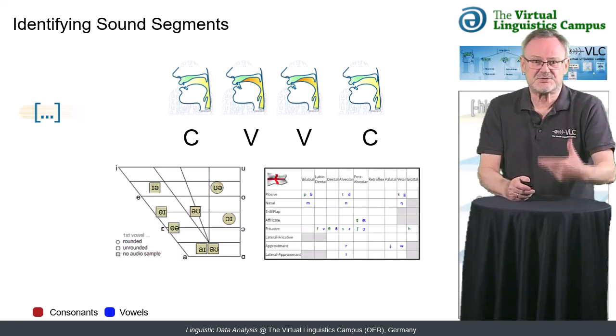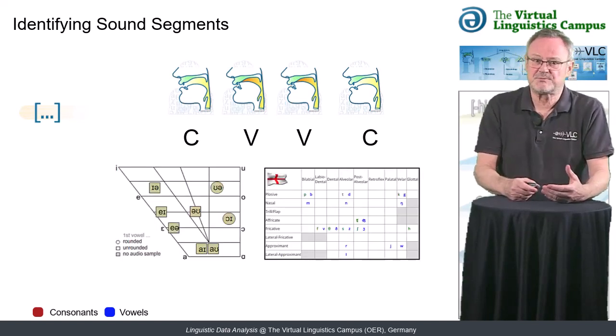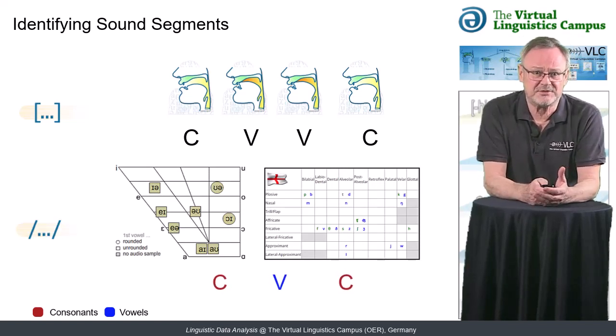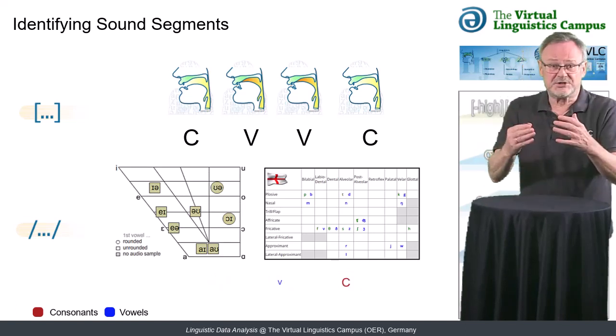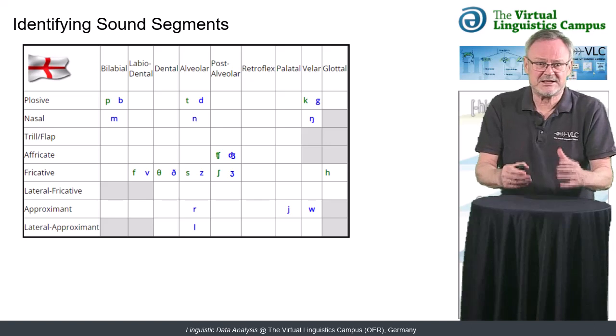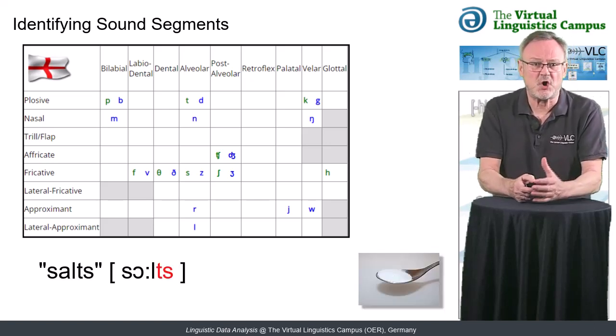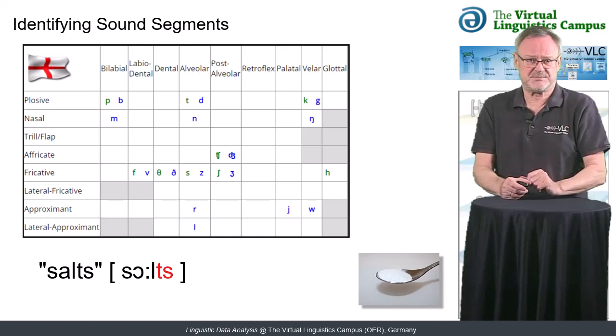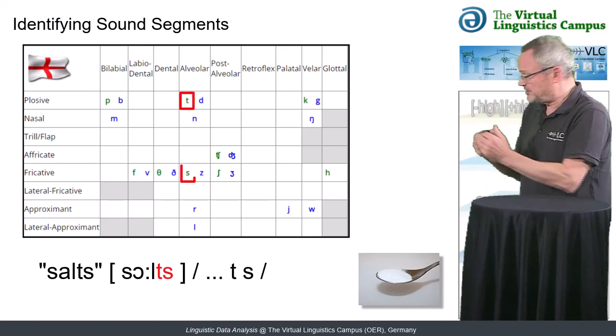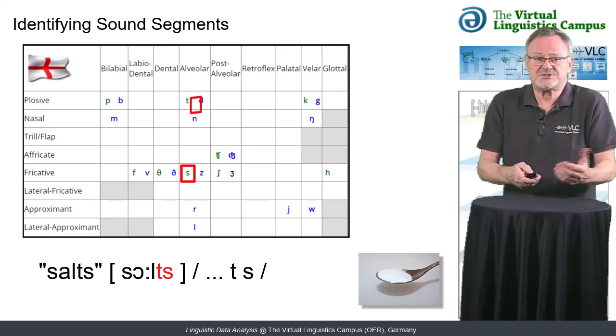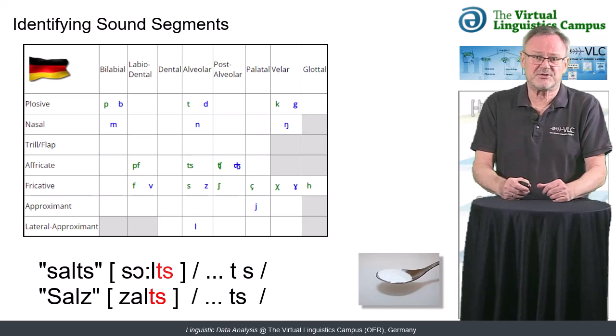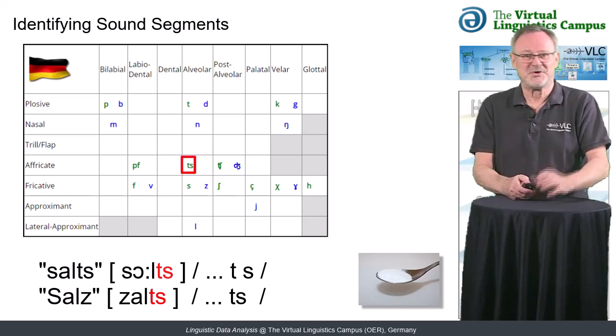If you have access to the sound system of the language, perform a phonemic analysis next and possibly refine the number of segments. For example, in English, the consonantal cluster T and S in SALTS is analyzed as two consonants, a plosive and a fricative, whereas in German SALTS it is a single affricate consonantal phoneme.